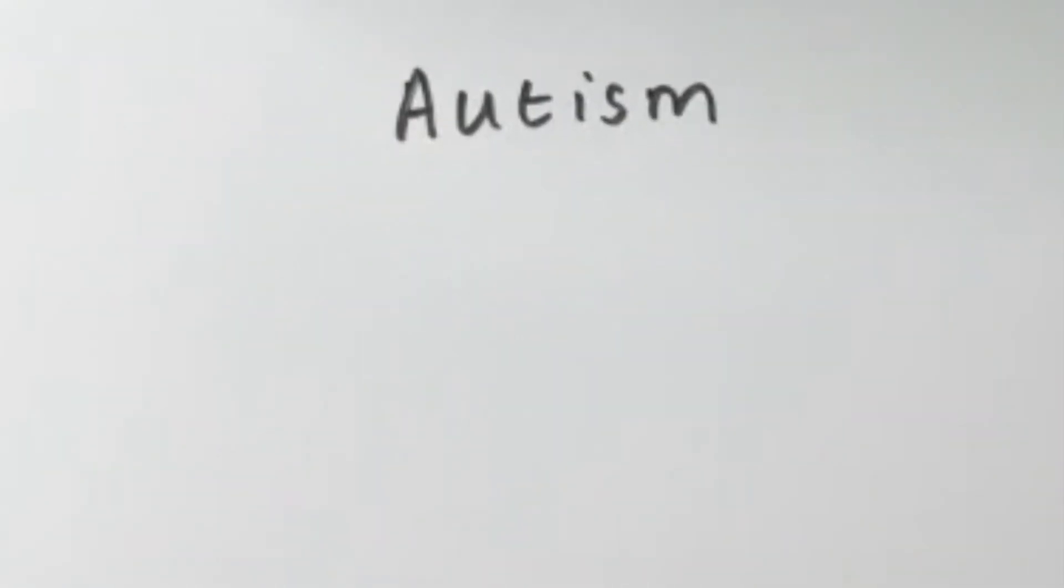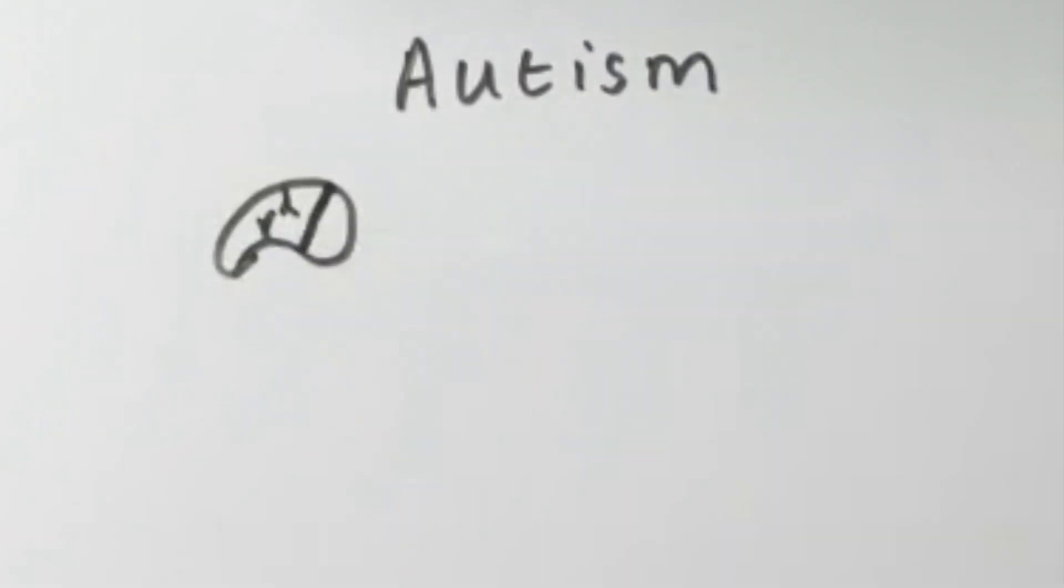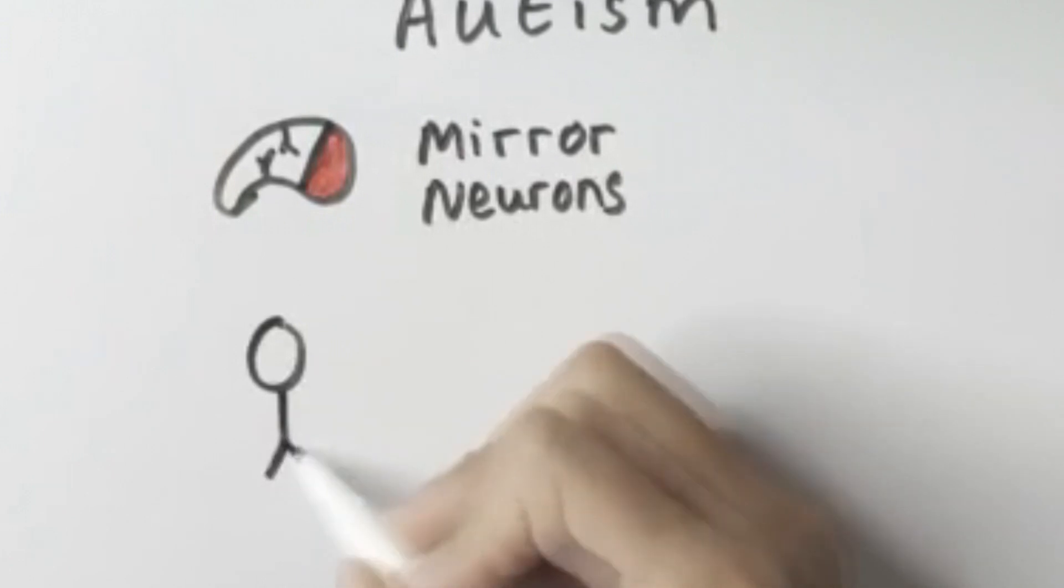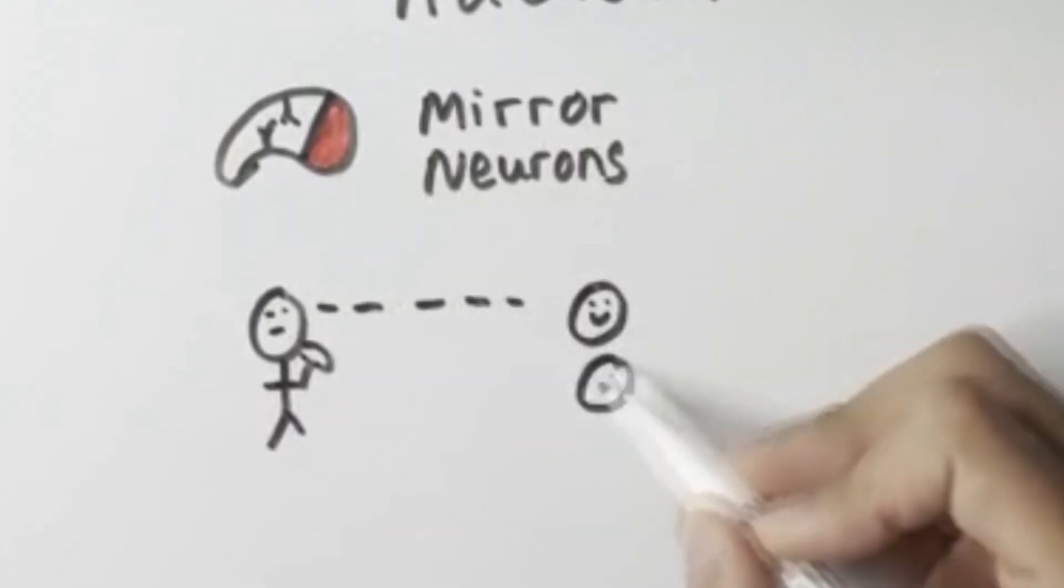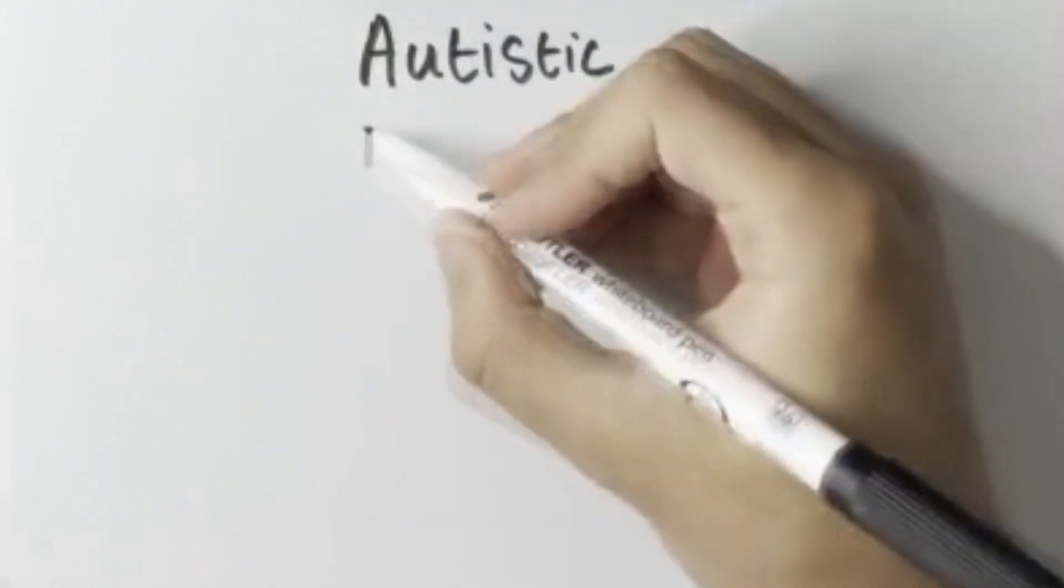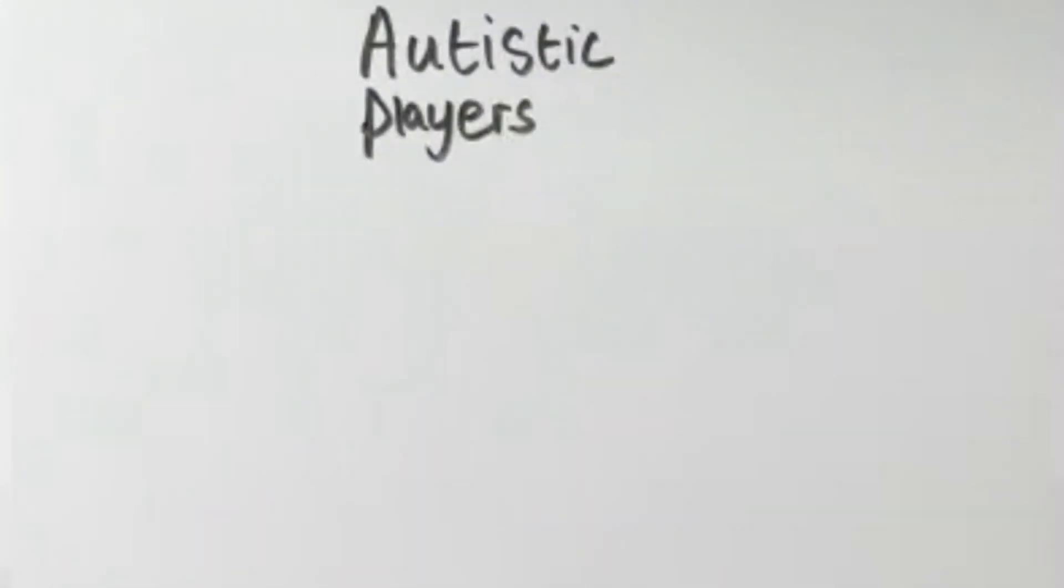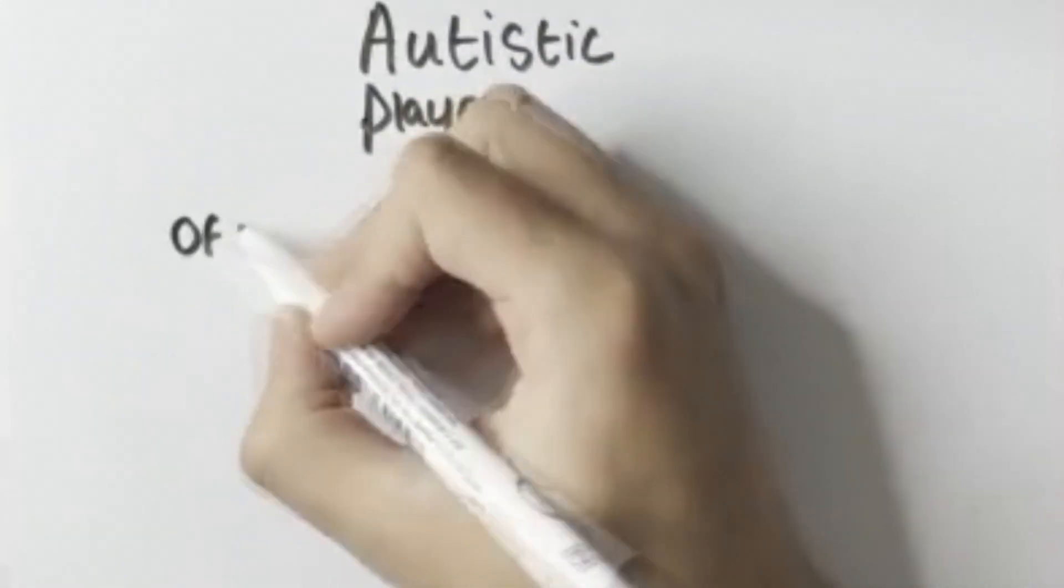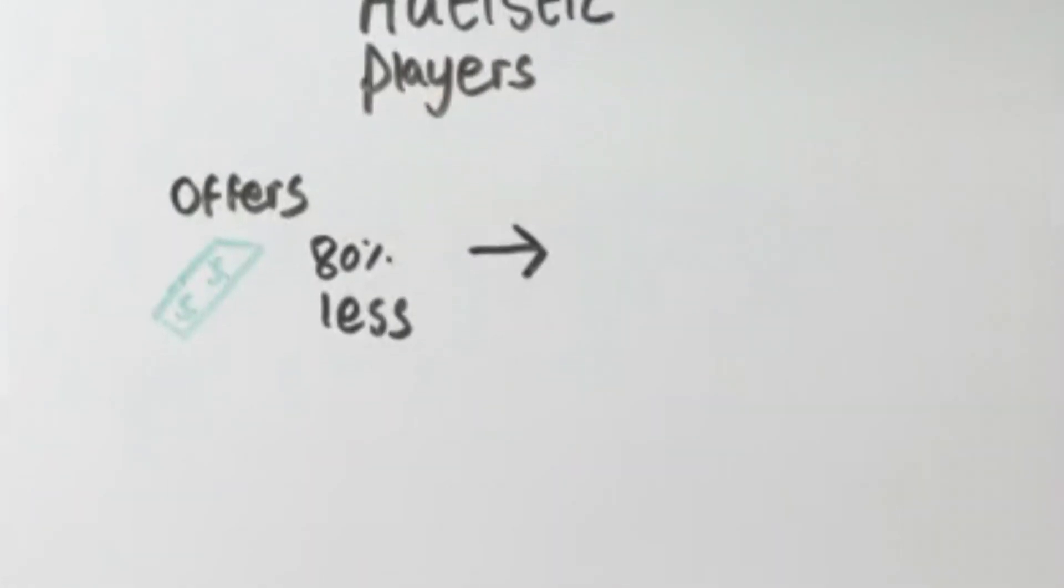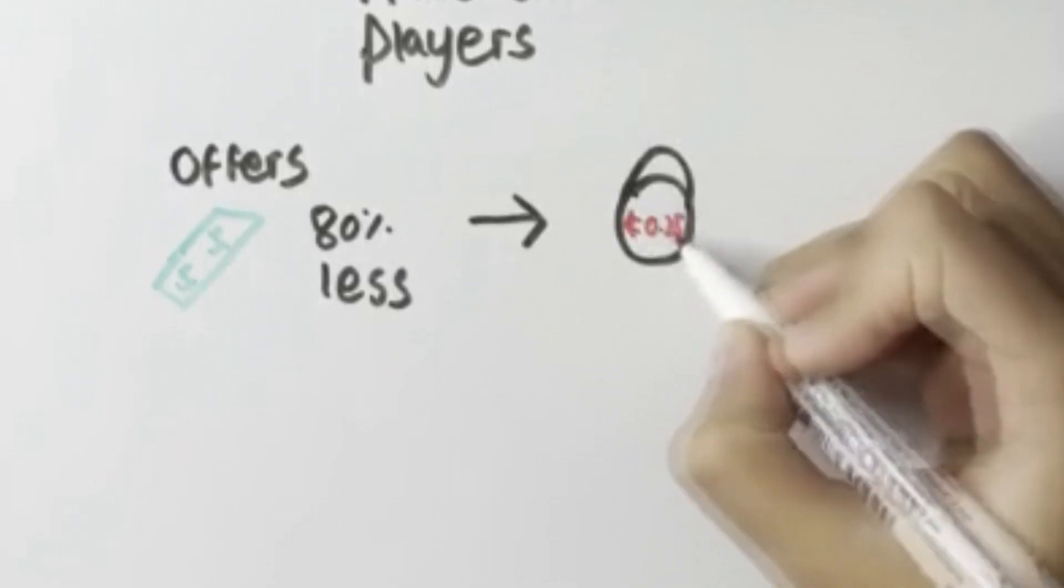This becomes even more clear when people with autism are asked to play this game. Autism compromises the area of the brain that's associated with mirror neurons. As a result autistic people often struggle to understand or predict other people's emotions. So what happened when they were asked to play this game? They played just like game theory would predict. On average, they made offers that were 80% less than what non-autistic people offered, with some of them offering even less than $1 to the other player.